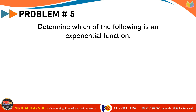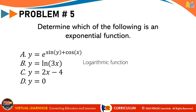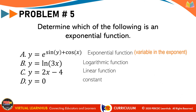Problem number 5: determine which of the following is an exponential function. A: y equals e raised to sine y plus cosine x. B: y equals ln of 3x. C: y equals 2x minus 4. And D: y equals 0. Letter B is a logarithmic function because of the ln. Letter C is a linear function. Letter D is a constant. And letter A is the exponential function because of the variable in the exponent.